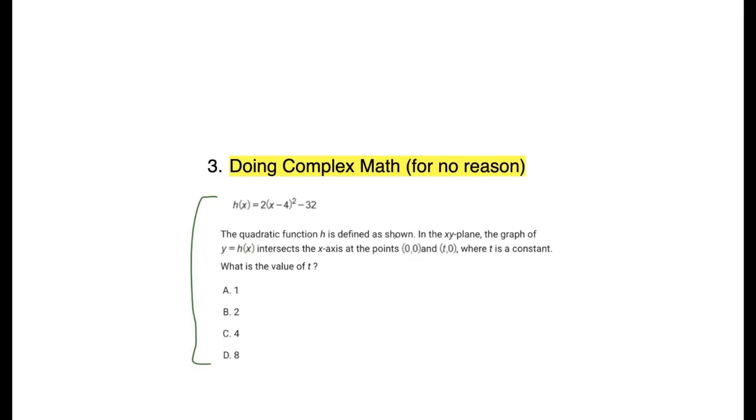The long way or the quote unquote long way is to, well, first off, interpret the questions. We have a quadratic function. We've got two points and we need to find T, which is a constant and they want the value of T. We can see here that these two values, zero, zero and T comma zero are the X intercepts. So to find the X intercepts, we'll just set H of X equal to zero. So if you set this equal to zero, we can add 32 on both sides, divide by two, 16, square root of both sides, we get four and then four equals X minus four. So X equals eight.